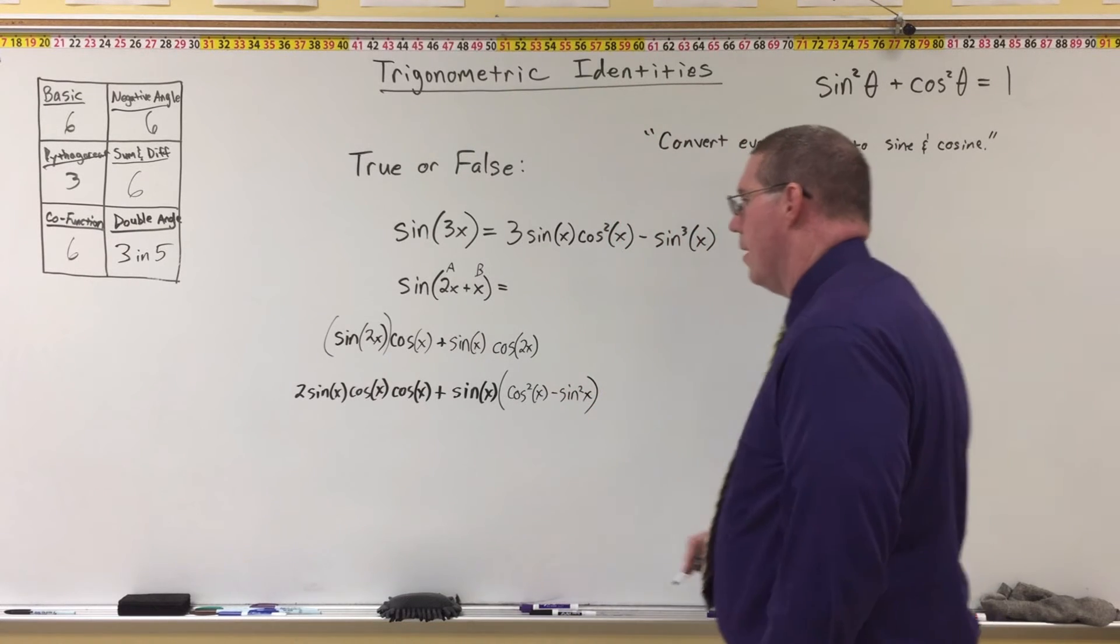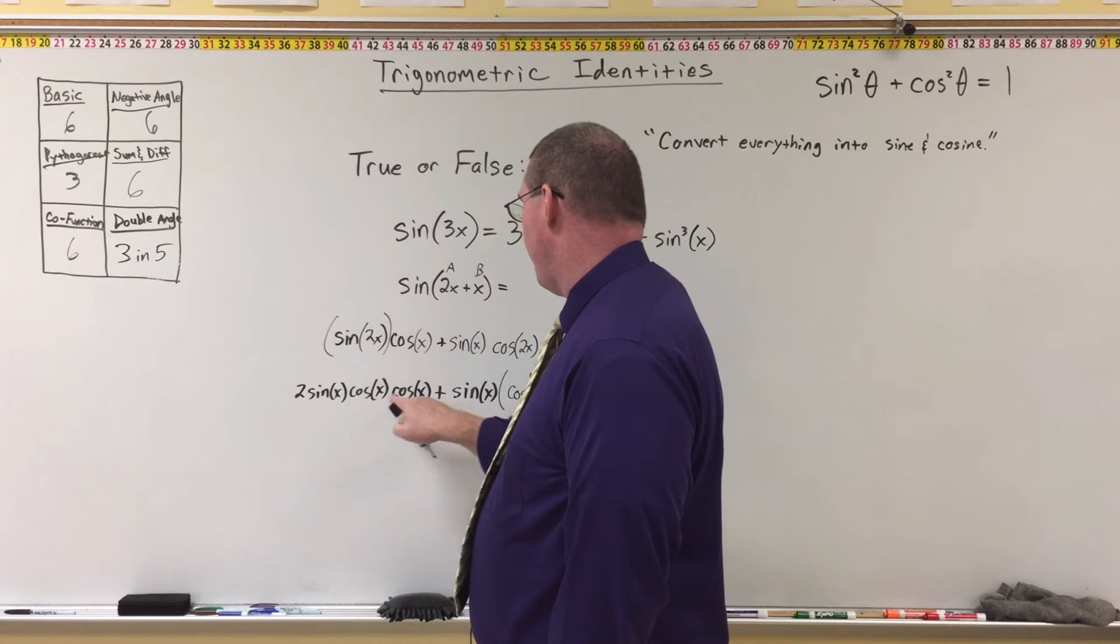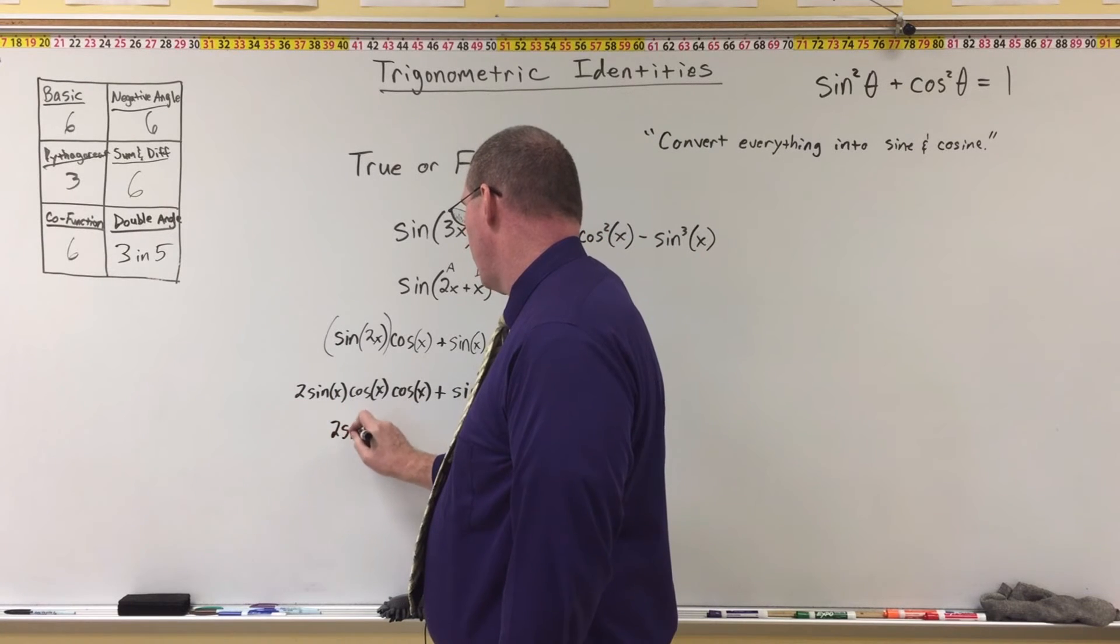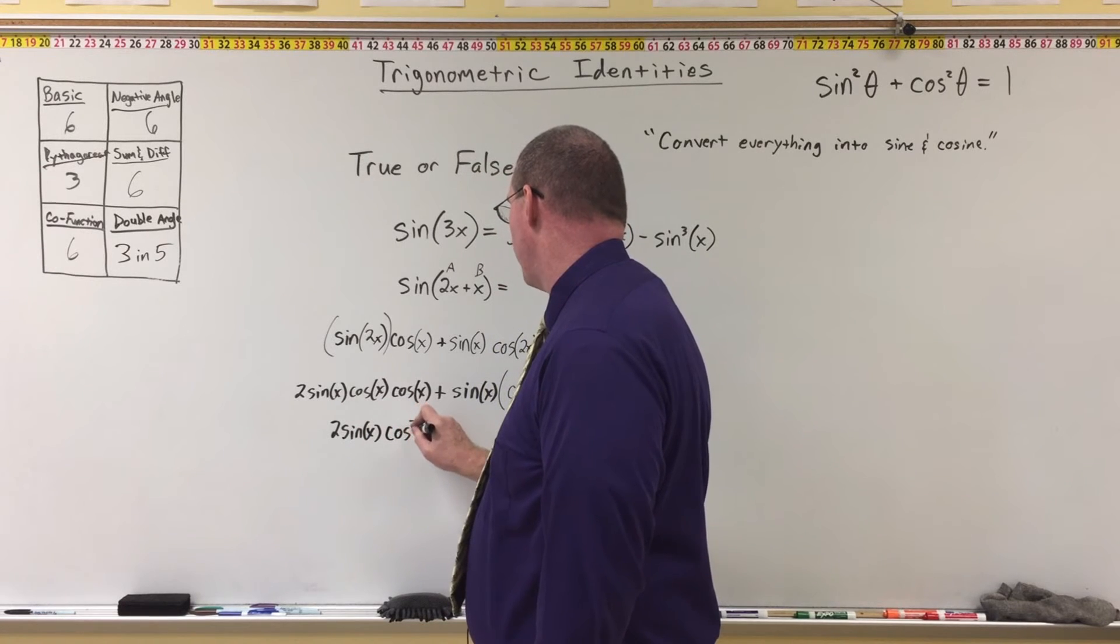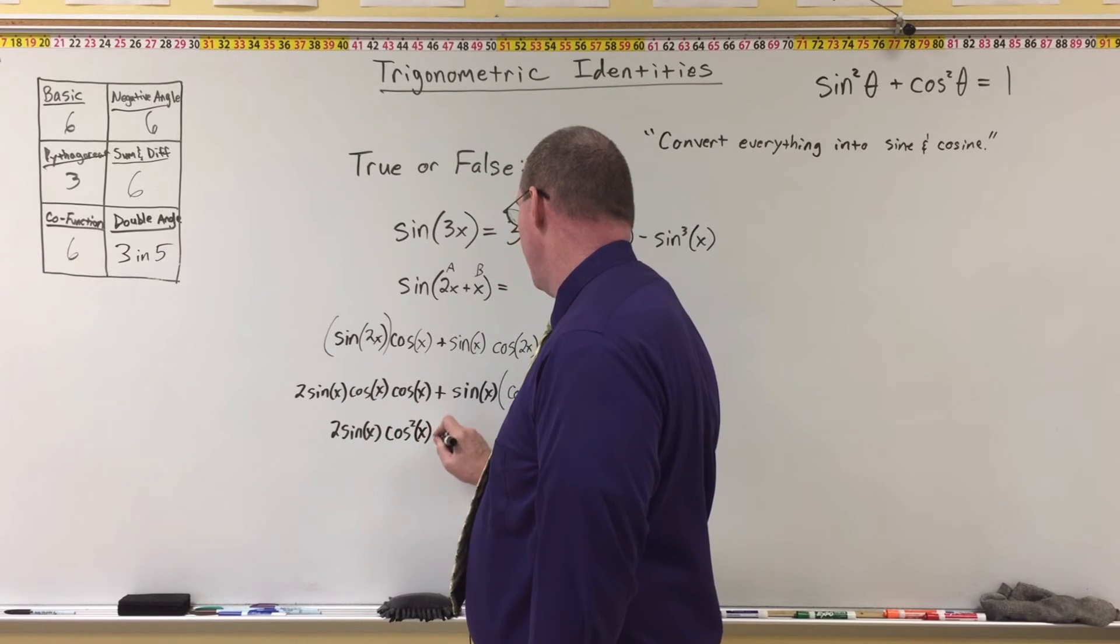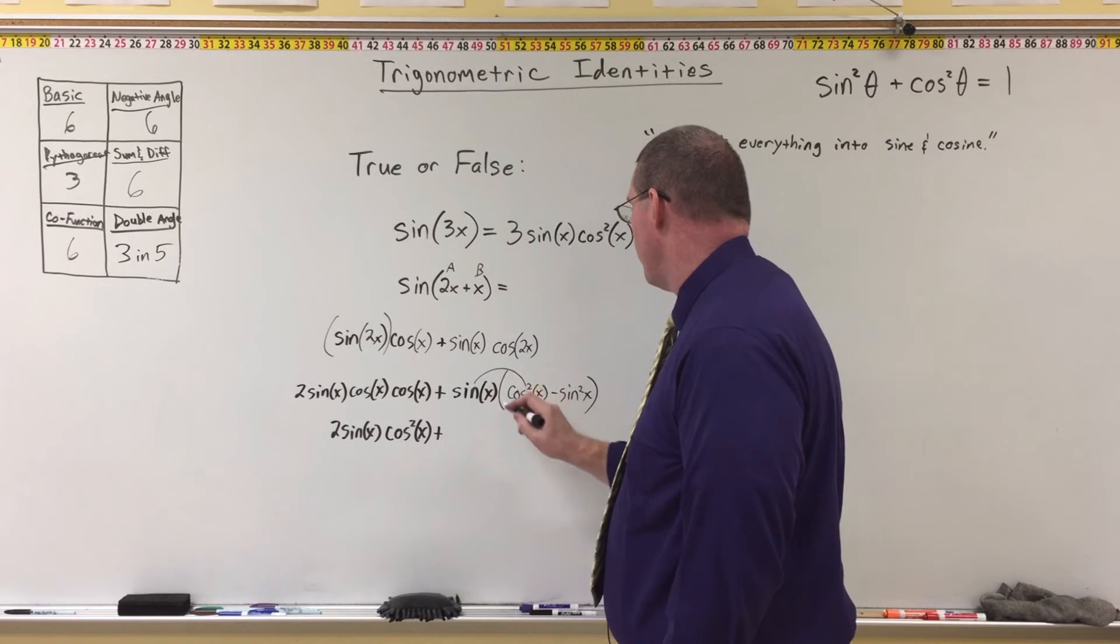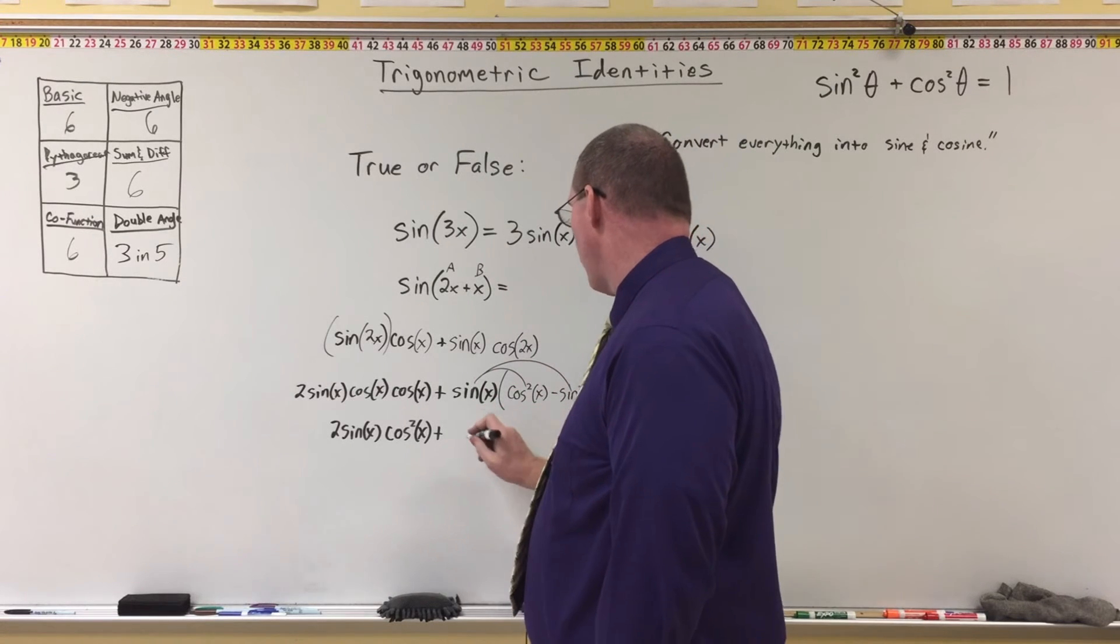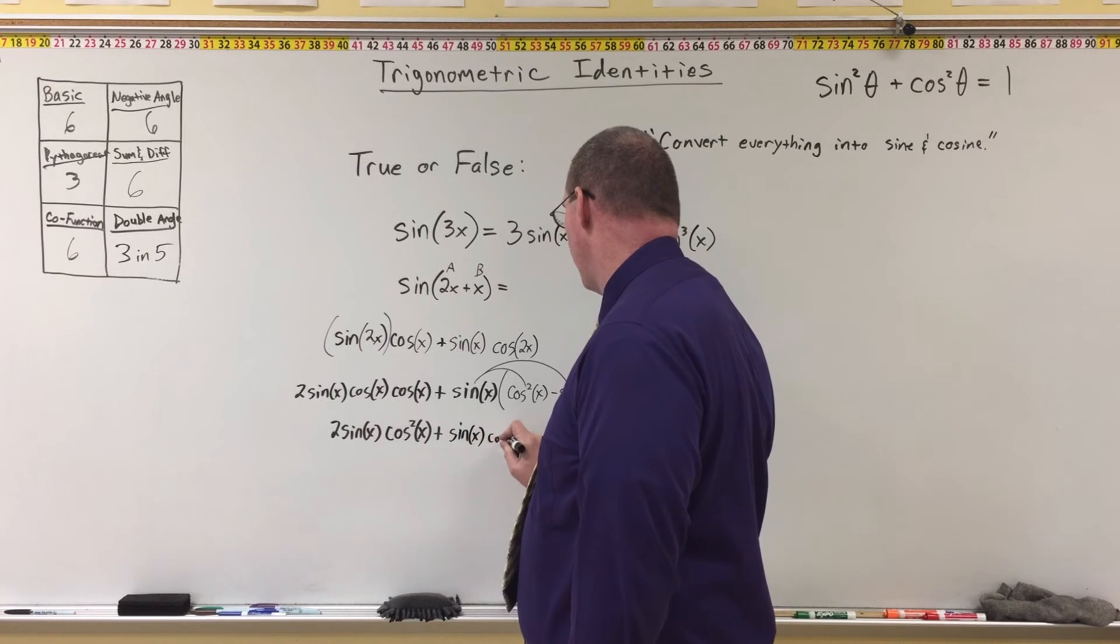And we know that cosine of 2x can be replaced with cosine squared of x minus sine squared of x, right? All right. Now, over here, I can simplify this first term. I have cosine times cosine, so I have 2 sine of x. And then cosine times cosine becomes cosine squared of x plus. Now here, I'm going to distribute the sine. I need to multiply sine by this, and I also need to multiply sine by this. Sine of x times cosine squared becomes sine of x times cosine squared of x.